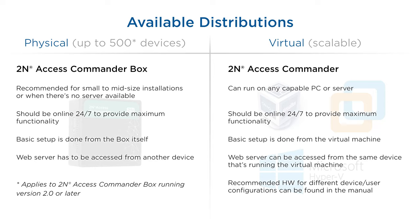The virtual one's basic configuration is done from the virtual machine and its web interface may be accessed from the physical PC on which the virtual machine itself is running. Its hardware requirements are subject to change and can be found on wiki.2n.cz.